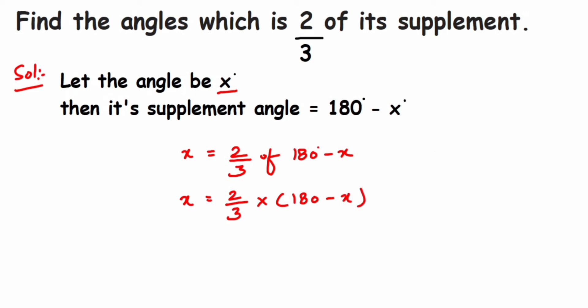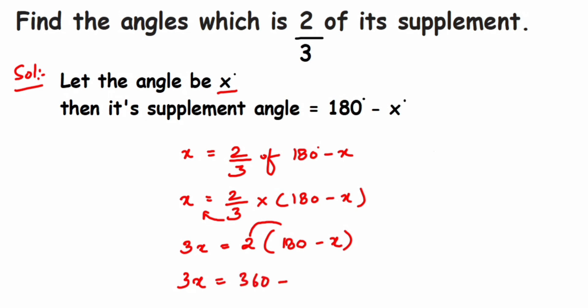I am going to transpose the 3 to the other side to make the calculation easier. Since 3 is in division, when moved it comes into multiplication, giving us 3x equals 2 into (180 minus x). Now opening the bracket: 2 into 180 is 360, and 2 into x is 2x. So we get 3x equals 360 minus 2x.